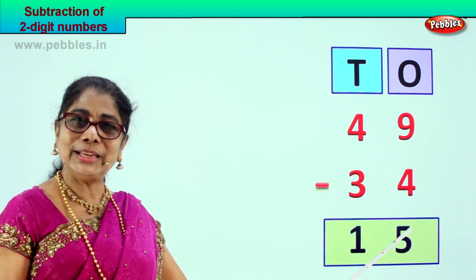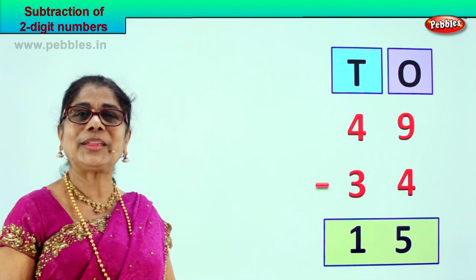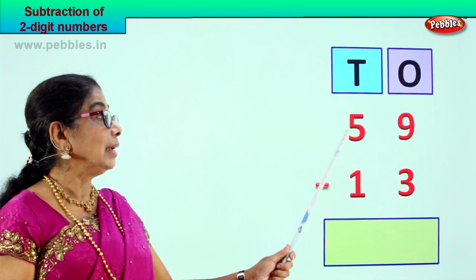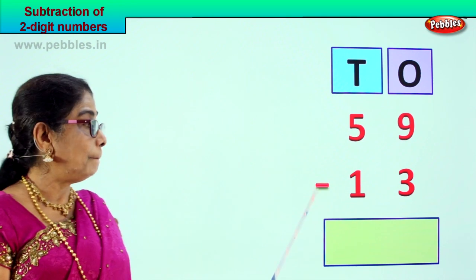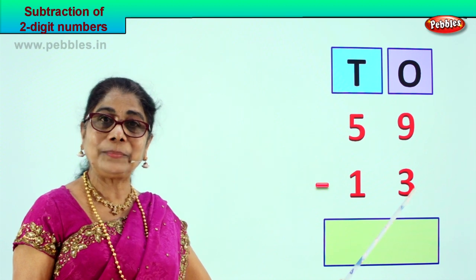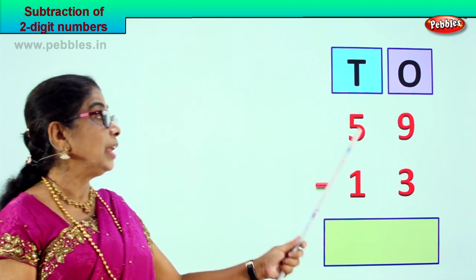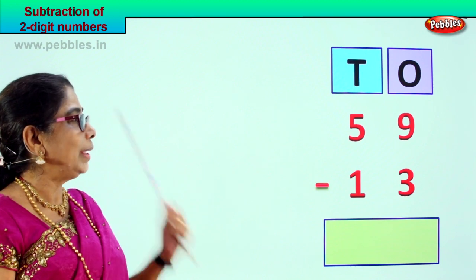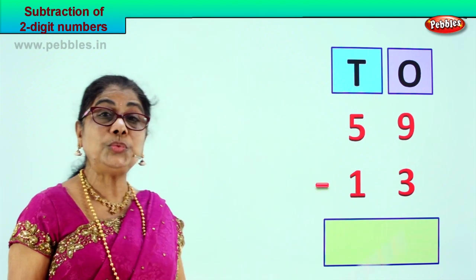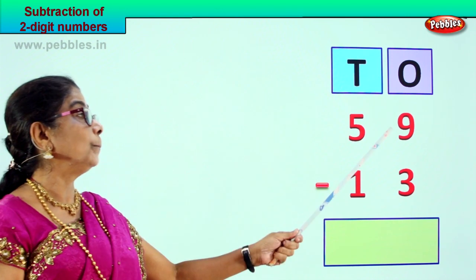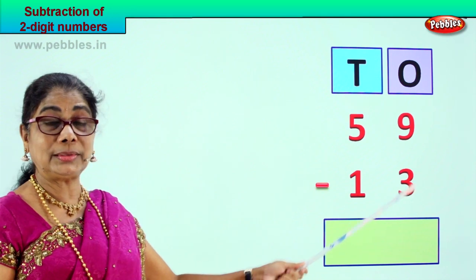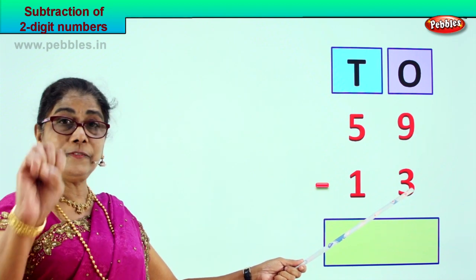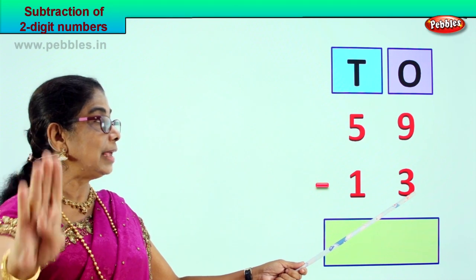Did you enjoy two digit subtraction? Let's take another sum. 59 minus 13. We have arranged in tens and ones order — five tens, nine ones, take away one ten, three ones. So we have 59 minus 13. First we do the ones: nine ones minus three ones.